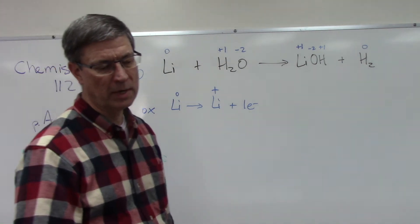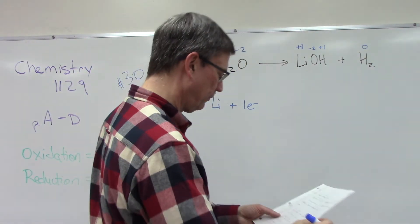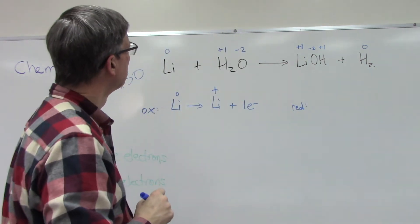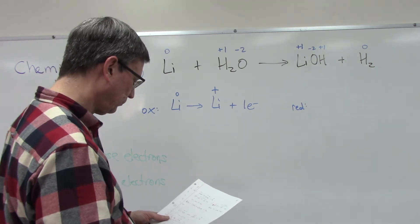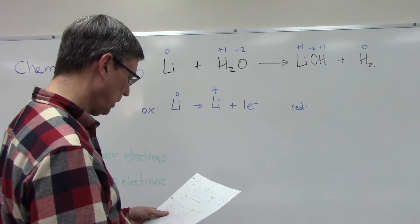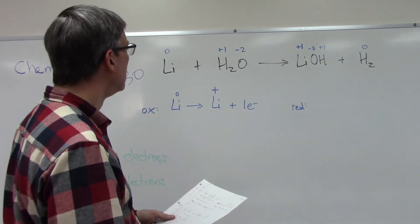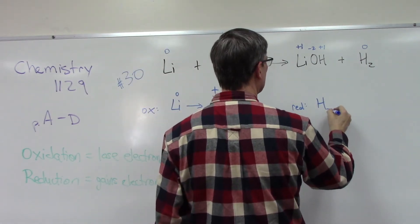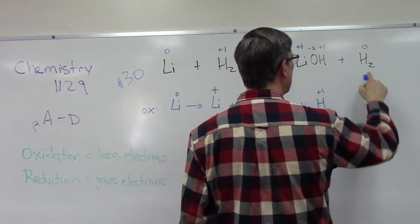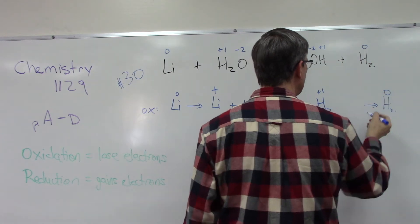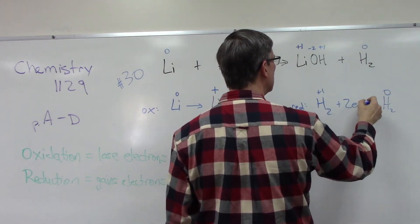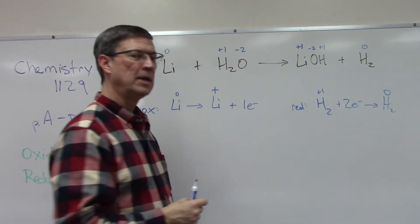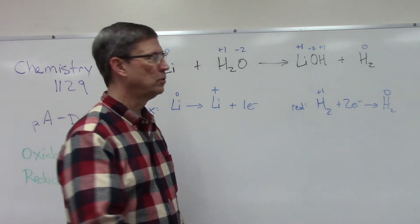Let's write down the oxidation is Li0 becomes Li positive 1 plus 1 negative electron. The reduction is, the hydrogen goes from positive 1, the positive 1 goes up here, we're going to end up with H being neutral, which means I need to add two electrons.